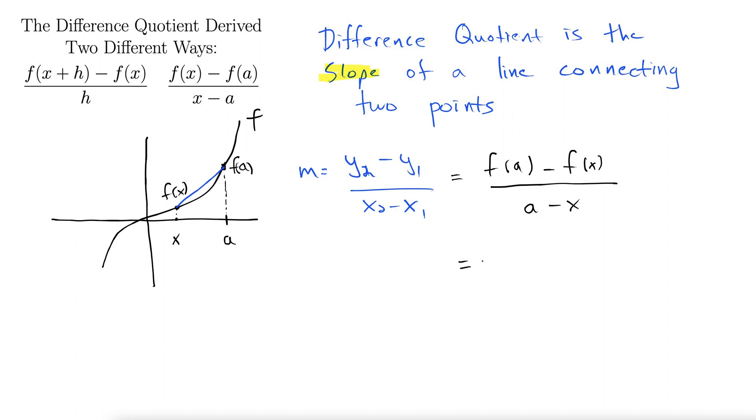Now that doesn't quite look right, so simply factor a negative one out at the top and the bottom. That will give us the familiar form of the formula: f of x minus f of a all over x minus a.